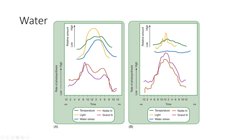In conclusion, light, leaf structure, and water can greatly affect photosynthesis in a plant. I hope you have a better understanding of these factors.